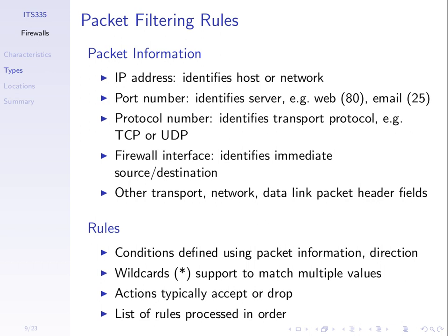A firewall rule consists of conditions and an action. If the conditions match — source address equals this, destination port equals this — then take an action such as accept or drop. Wildcard values can be used to match any value in a range. Conditions combine packet information and direction. If the conditions are true, the packet is either accepted or dropped.